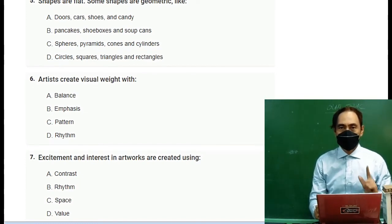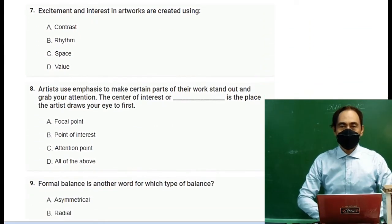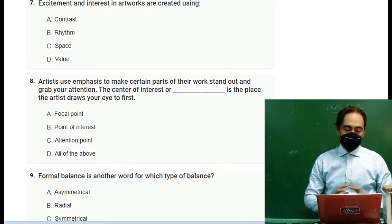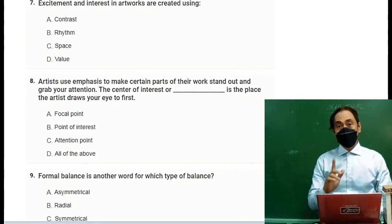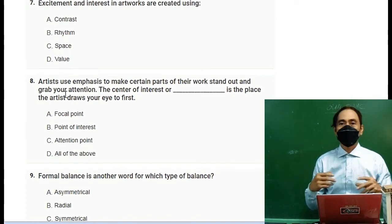Number six: Artists create visual weight in A. balance, B. emphasis, C. pattern, D. rhythm. Choose the correct answer guys by encircling the letter. We have only 10 questions. Number seven: Excitement and interest in artworks are created using A. contrast, B. rhythm, C. space, or D. value. Which is the best answer guys?